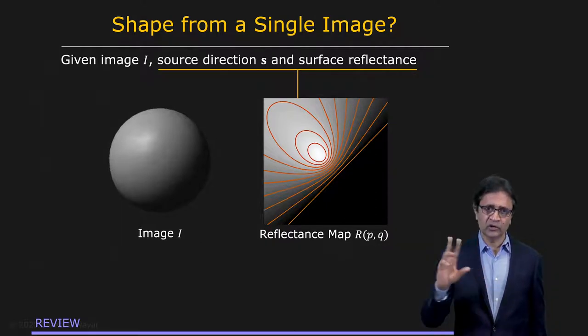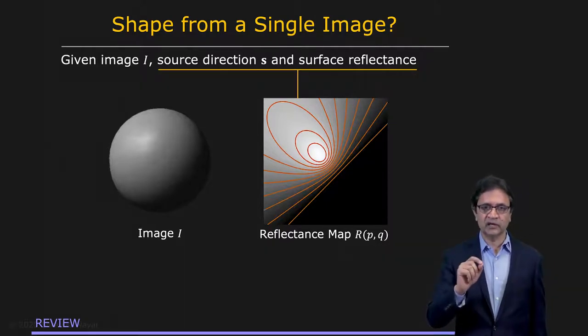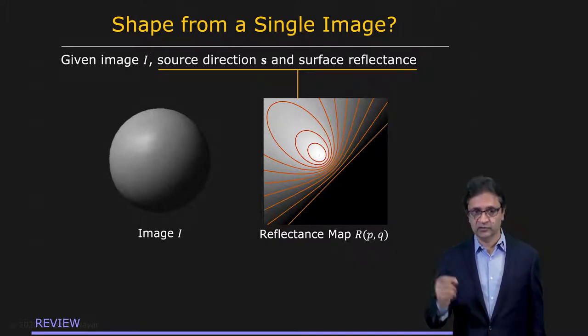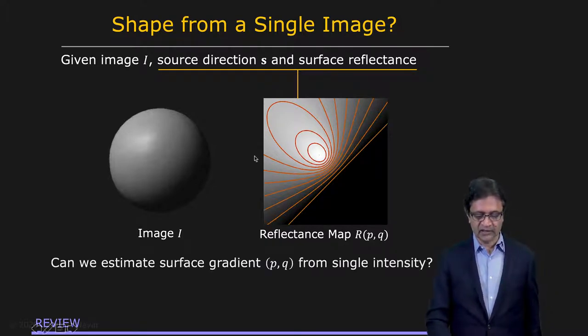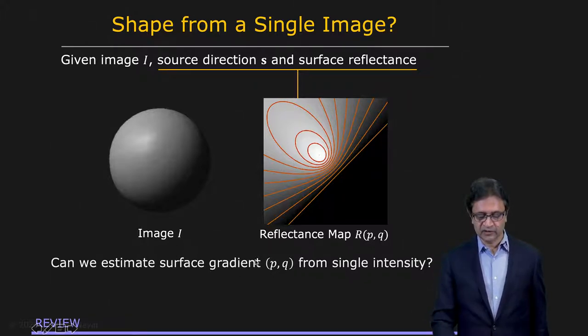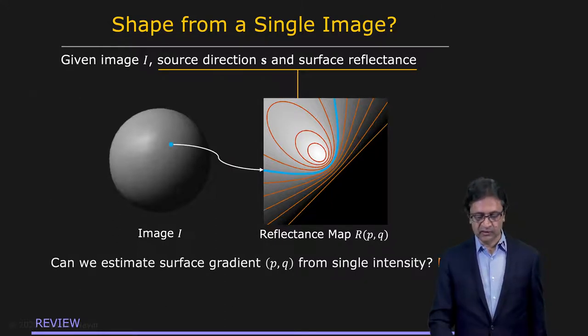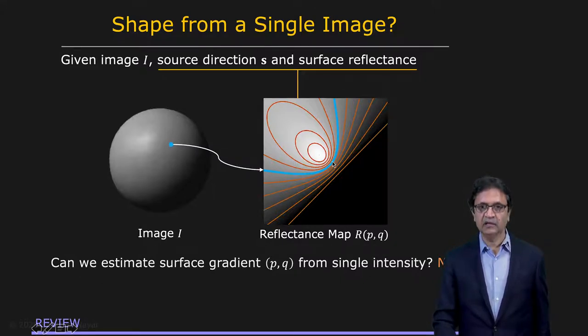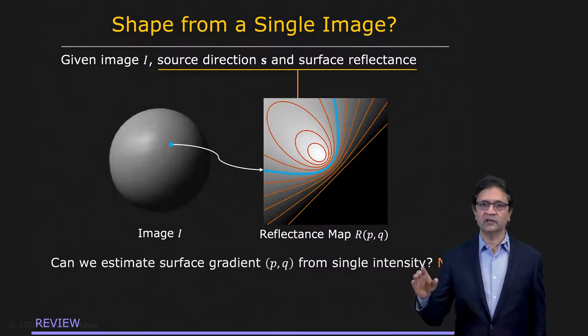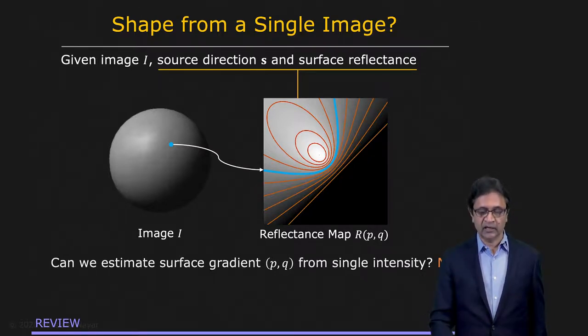But here, of course, we want to go the other way. We want to go from an intensity value to figure out what the surface orientation is. So the question we're asking is, can we estimate the surface gradient p,q from a single intensity value? And we know the answer is no. And the reason is given an intensity value right here that corresponds to what's called an iso brightness contour in the reflectance map. And what that's telling you is that there's an entire family of p,q values, an infinite number of p,q values that would generate the same brightness value in the image.